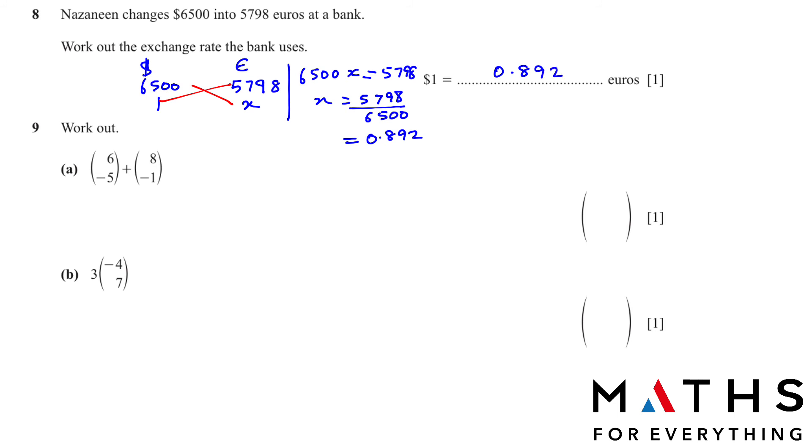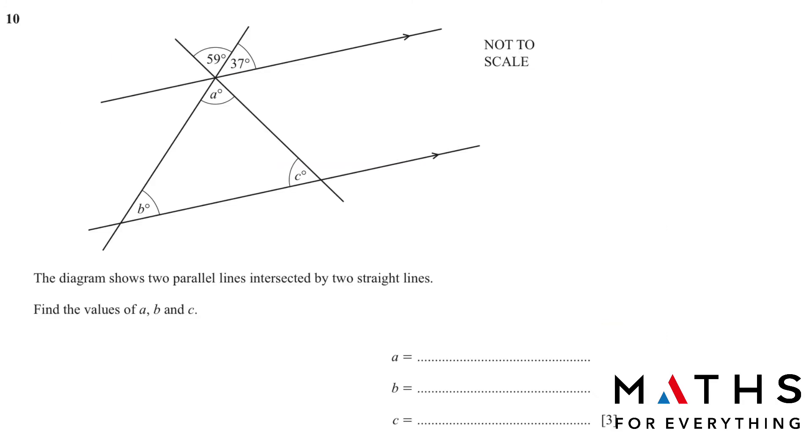Question number 9 is very easy. You have column vector. We just add the numbers. There is a plus in the middle. So 6 plus 8. You will get 14. And negative 5 plus negative 1. Put it in the calculator, negative 5 plus minus 1. You will get negative 6. So that is our final answer. Next, we have again a column vector, but there is a number outside. That number means you multiply. So 3 multiplied by negative 4 is negative 12. And 3 multiplied by 7 is 21.